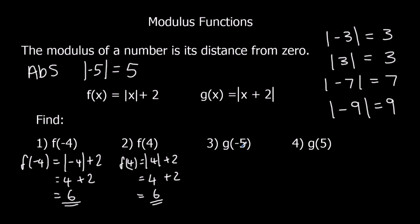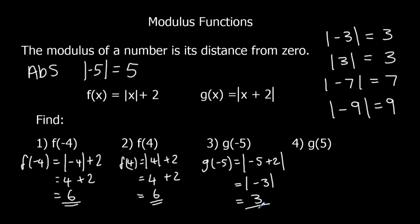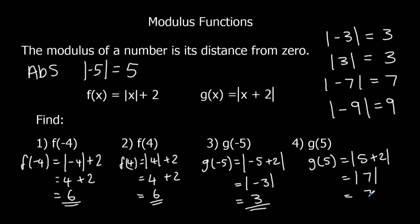For g(−5): g(−5) = |−5 + 2| = |−3| = 3. And g(5) = |5 + 2| = |7| = 7.